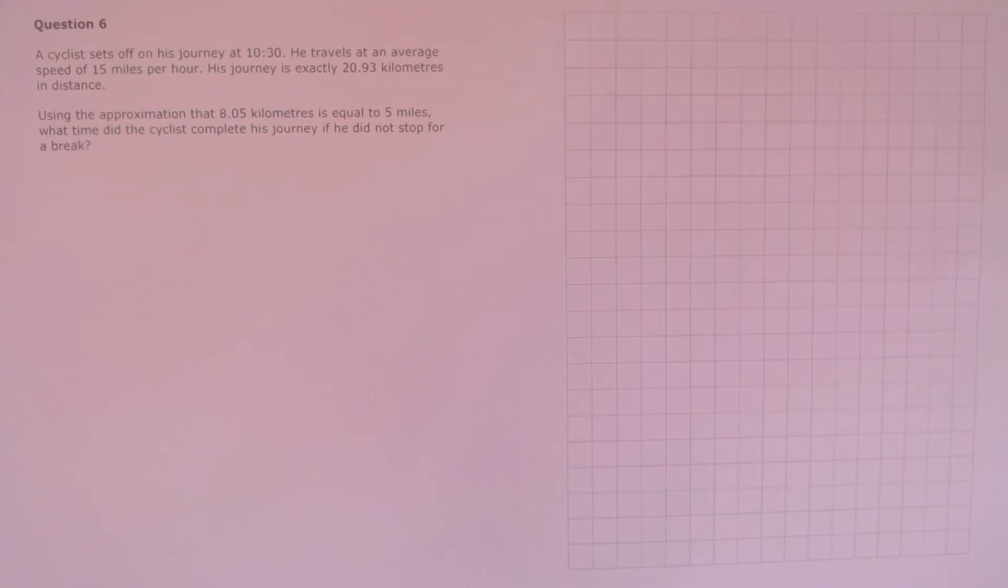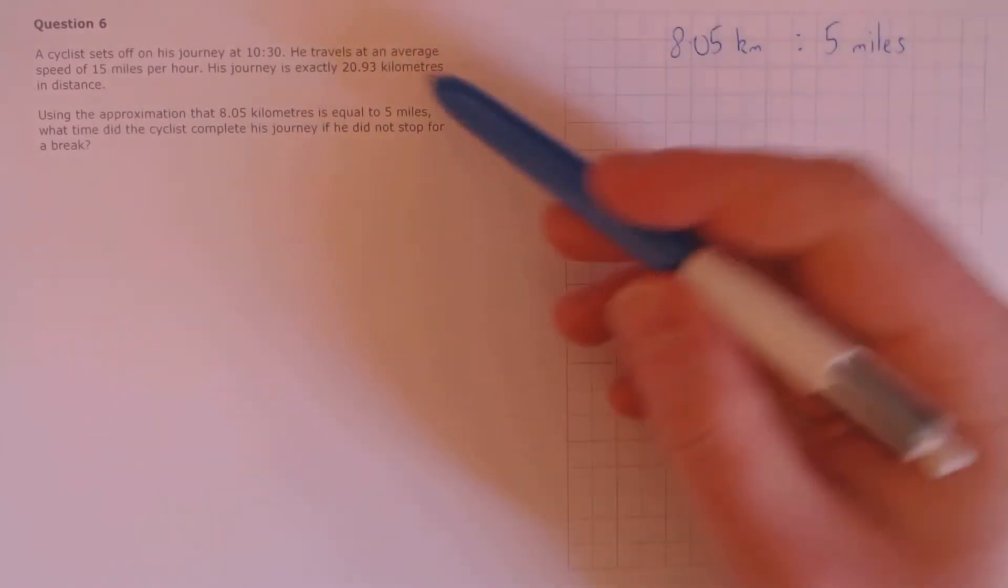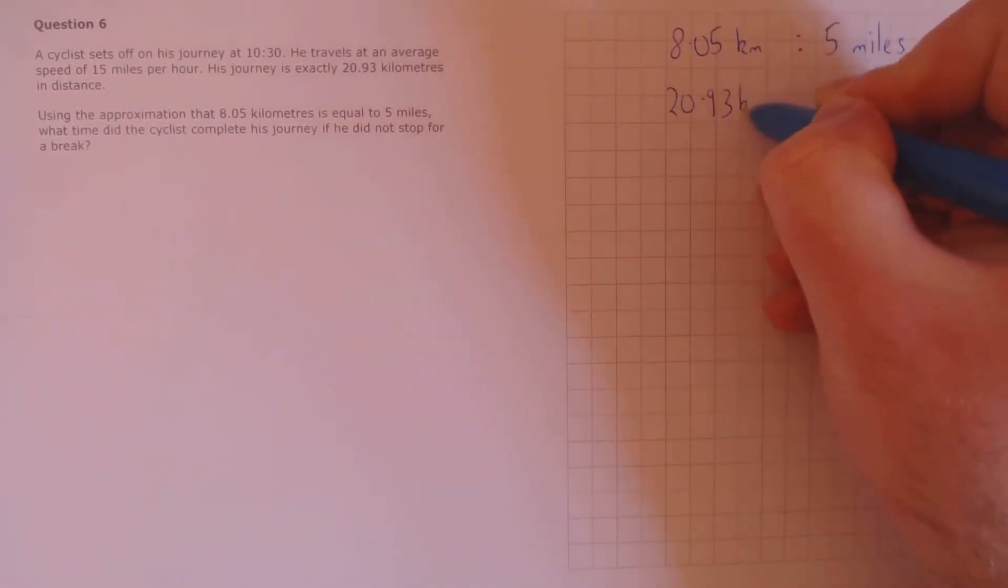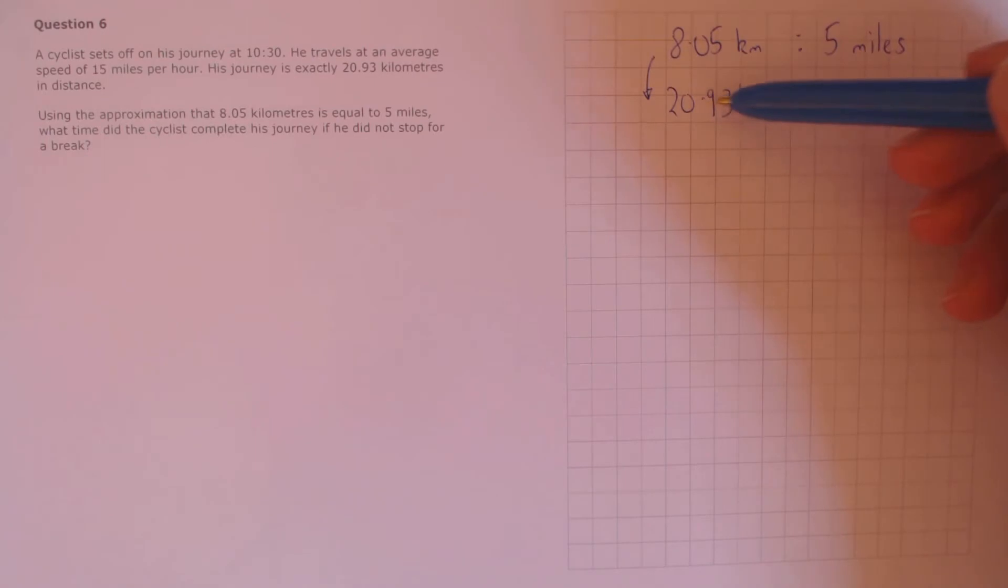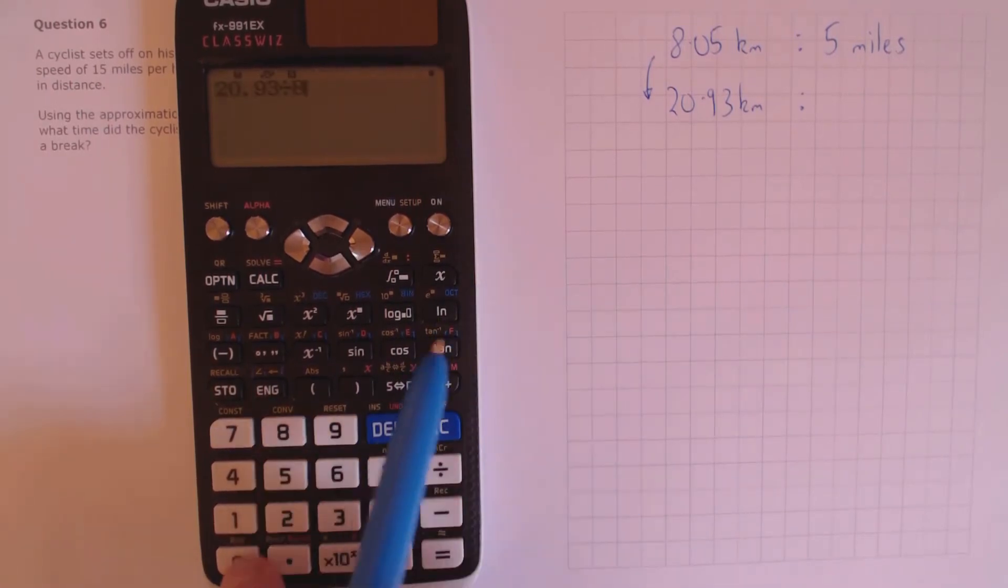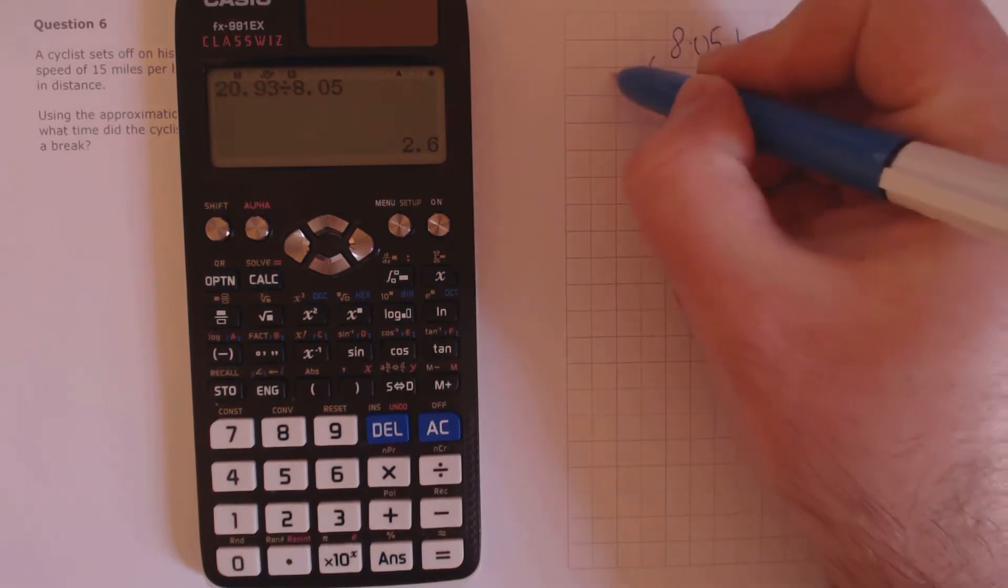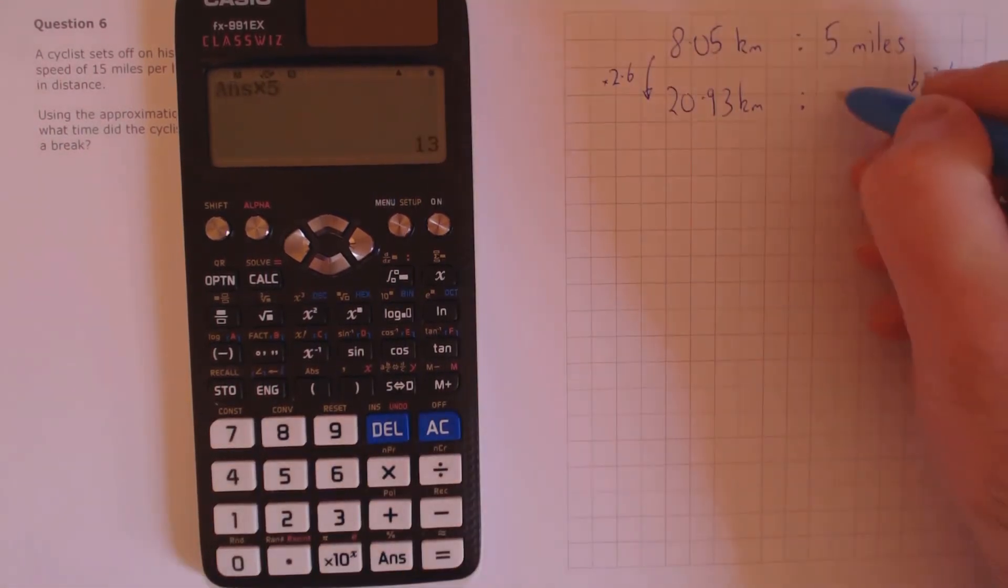Question 6. A cyclist sets off on his journey at 10:30. He travels at an average speed of 15 miles per hour. His journey is exactly 20.93 kilometres in distance. Using the approximation that 8.05 kilometres is equal to 5 miles, what time did the cyclist complete his journey if he did not stop for a break? First let's figure out what 20.93 kilometres is in miles. To do this we need to find what number we've multiplied by to get from 8.05 to 20.93, so we'll do that by dividing 20.93 by 8.05, which gets us 2.6. Let's do the same to the other side, so 5 times 2.6 is 13 miles.